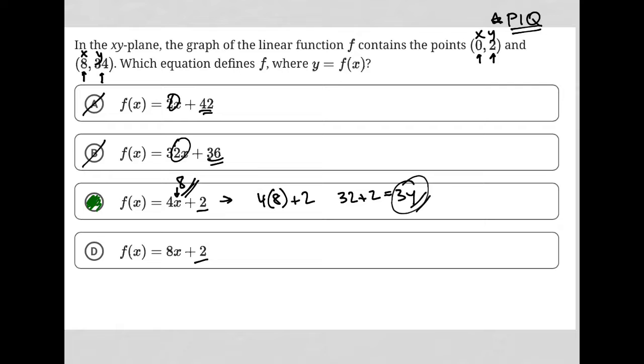The other way to solve this, by the way, is just to think about this through an f(x) equals mx plus b way, which is just the slope-intercept form of the equation. We know that b is equal to 2 because 2 is the y-intercept.